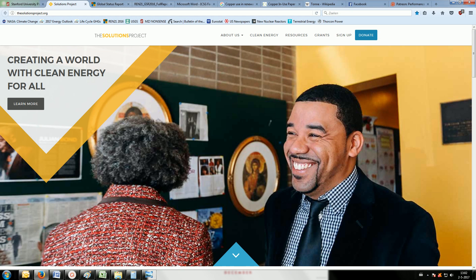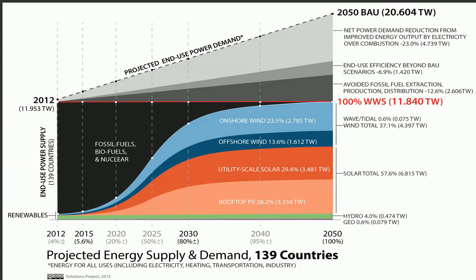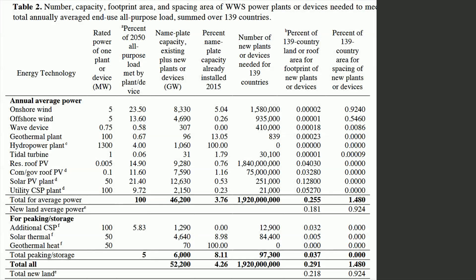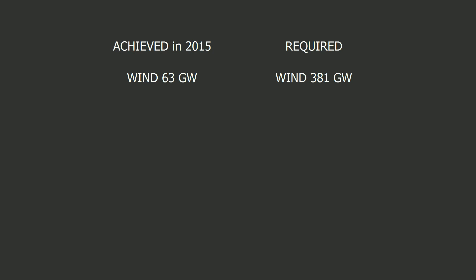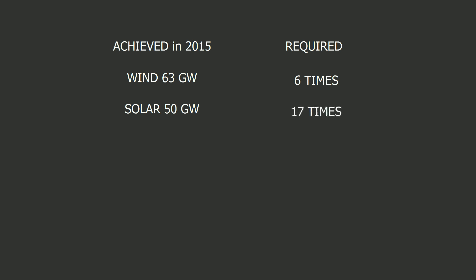Let's consider the most optimistic 100% renewable scenario there is. It is called the Solutions Project. It supposes that we need about 110,000 TWh of electricity output per year by the year 2050, and it assumes that almost everything has been electrified by then. The Solutions Project assumes that we need roughly 15,000 gigawatts of wind and 30,000 gigawatts of solar capacity by the year 2050 — 33 years from now. With a linear model, we would have to add 381 gigawatts of wind and 878 gigawatts of solar to the grid each year — 6 times more wind and 17 times more solar additions per year than we achieved in 2015.